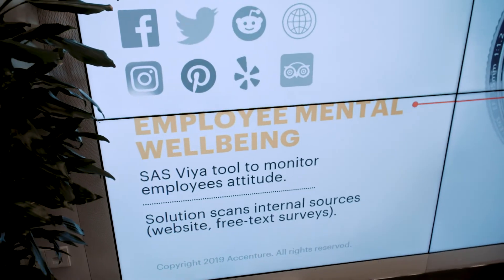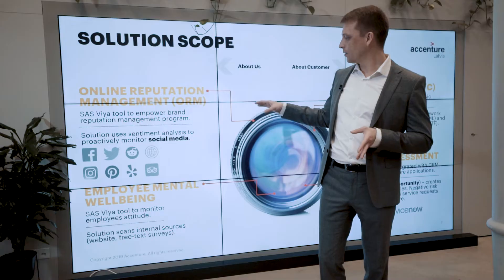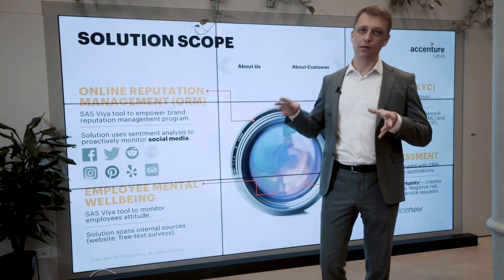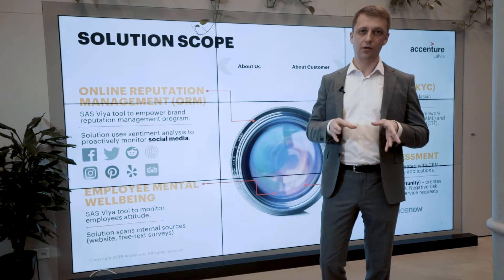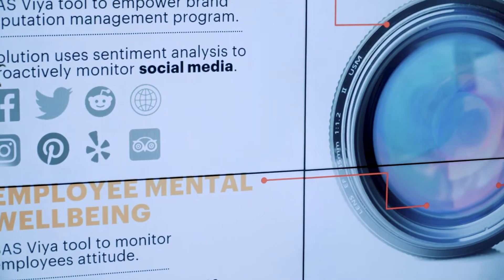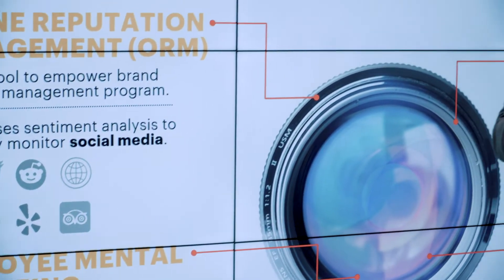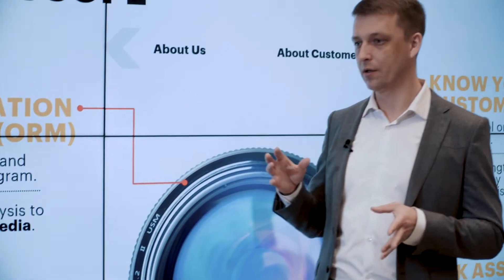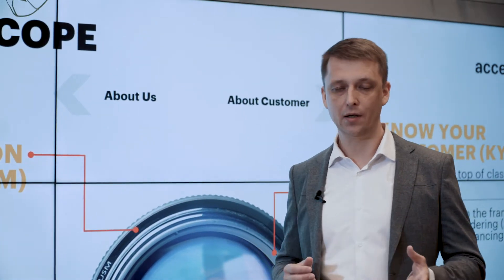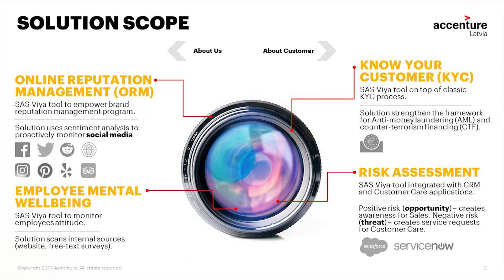The second scenario is made for HR. In this scenario, Spider analyzes internal sources like comments, employee free-text surveys, catches complaints and topics that could be addressed to HR.